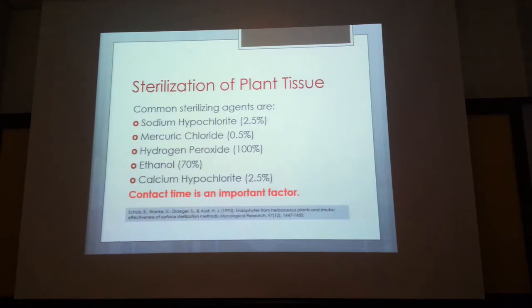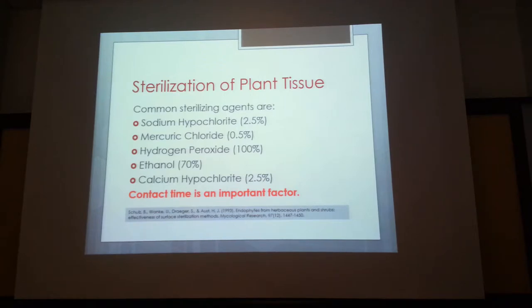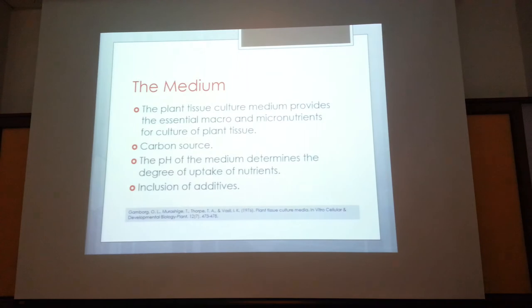For a new plant, I establish contact time by keeping tissue in 2.5% calcium hypochlorite for 10, 20, 30 minutes, or one hour, then washing and establishing on media to see which concentration killed off fungal or bacterial colonies. If concentration is too strong it may kill the plant, so we must establish the optimal concentration. This is a critical step in establishing plant in vitro.